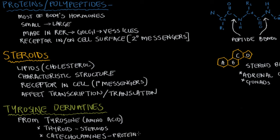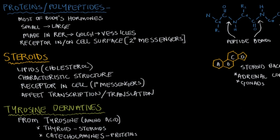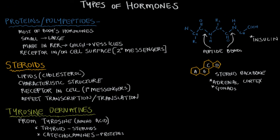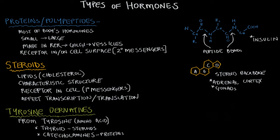So the thyroid hormone tyrosine derivatives act like steroids, and the catecholamine tyrosine derivatives act like proteins and polypeptides. But it's important to remember they form their own unique class because they're all derived from the amino acid tyrosine. I went ahead and drew in what tyrosine looks like — that's the amino acid this class of hormones is derived from.